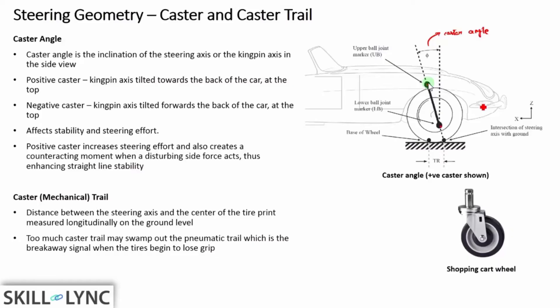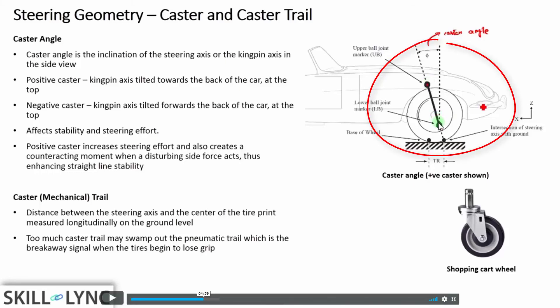In the side view, the kingpin makes an angle with the vertical axis, and this angle is called the caster angle. Applying a sign convention, angles in the counterclockwise direction give you a positive caster angle. If the kingpin axis is inclined in the opposite direction, you would have a negative caster angle.